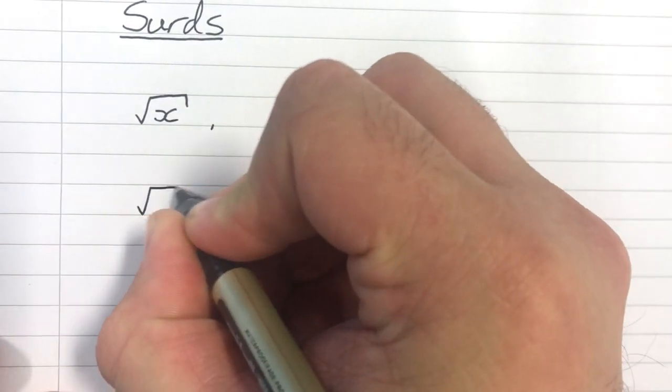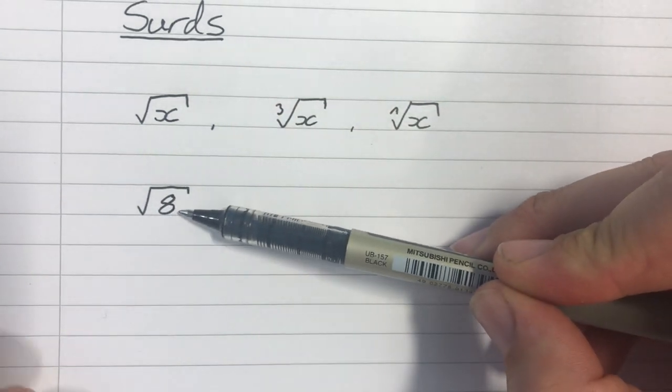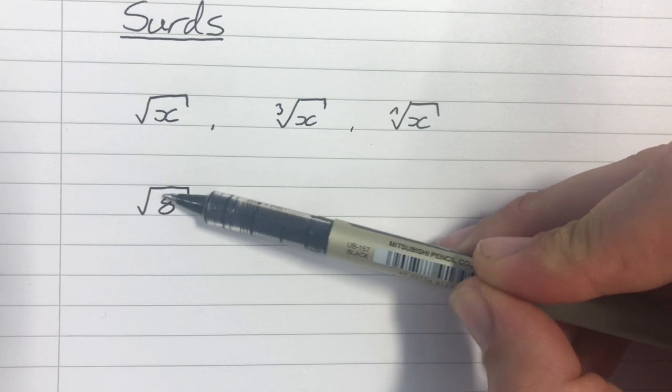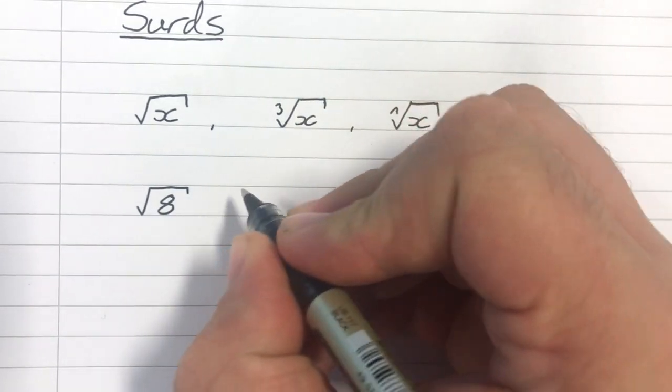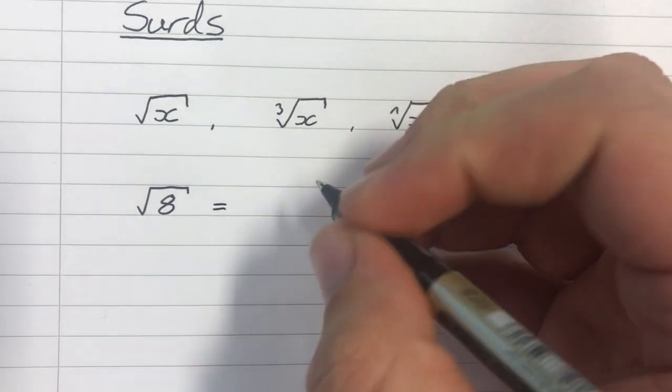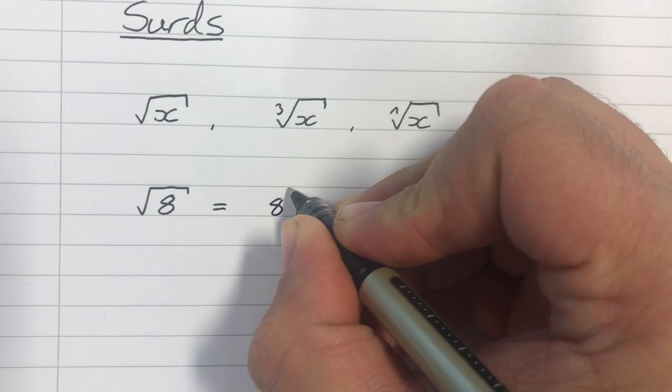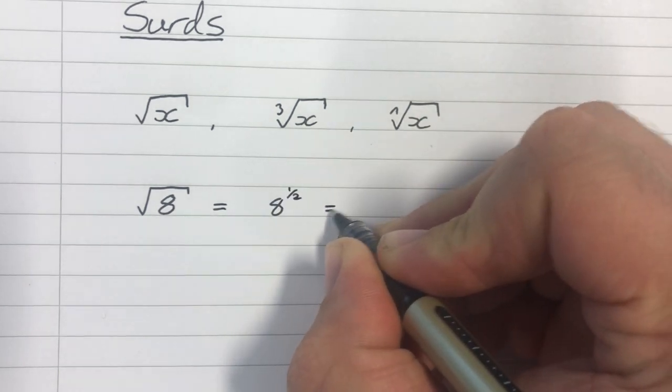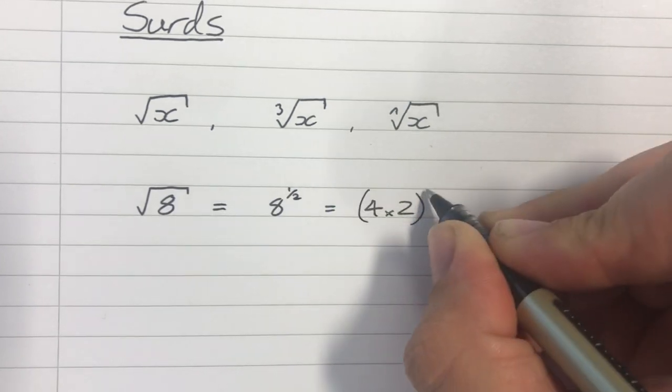So for example, let's start with something like the square root of 8. Now 8 is not a square number, which means that this cannot be written as an integer. It is an irrational number. But we can simplify this surd, because we can say, well, this is equal to 8 to the half. We could say that's equal to 4 times 2 to the half.